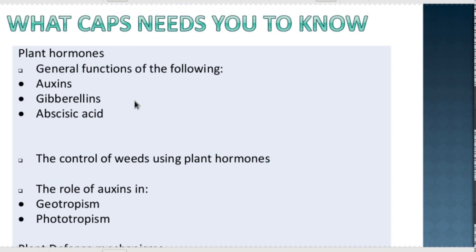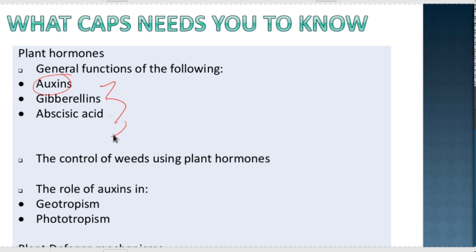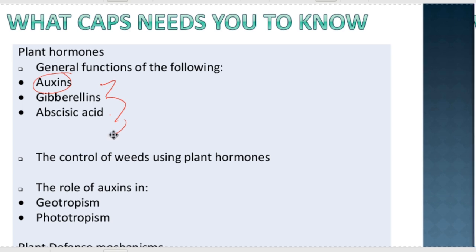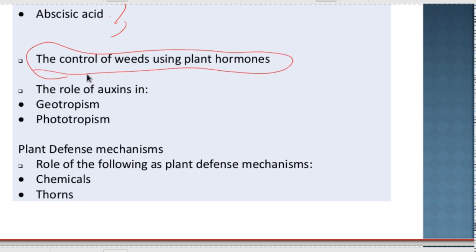So what does CAPS need you to know about plant hormones? We need to know the general functions of three main hormones: auxins, gibberellins, and abscisic acid. Be careful — a lot of textbooks discuss more than that, but you don't need to know more than those three. We also need to know how we use these plant hormones to control weeds in gardens and when planting food. And then also the role of auxins — we need to know about geotropism and phototropism.